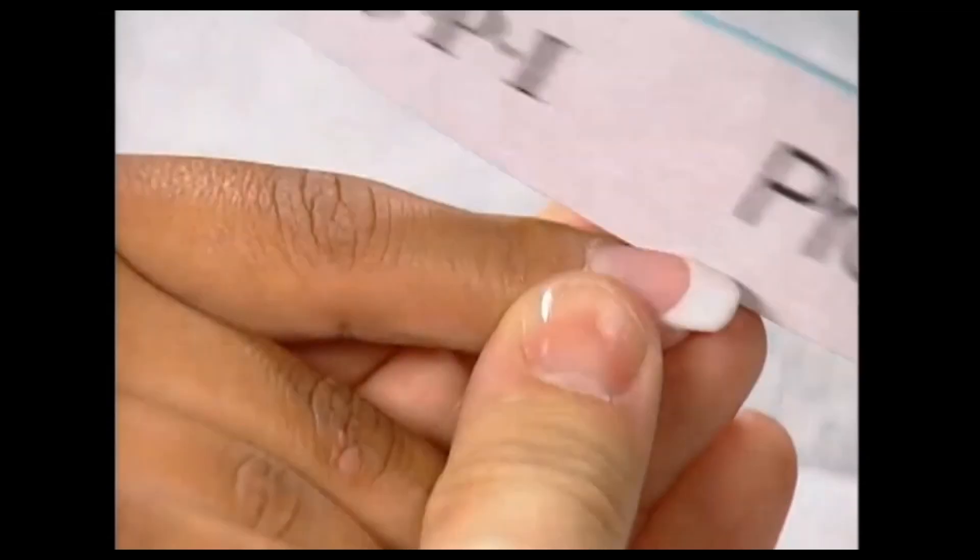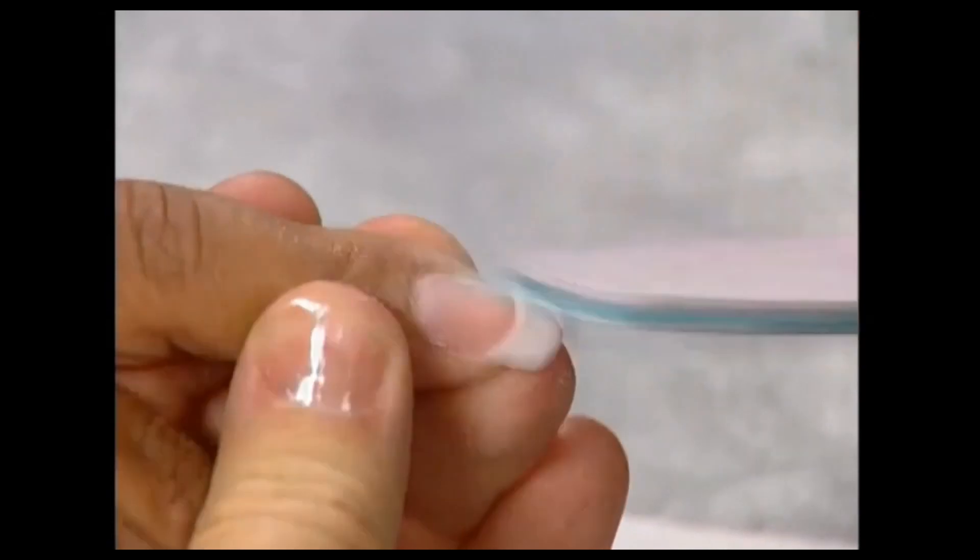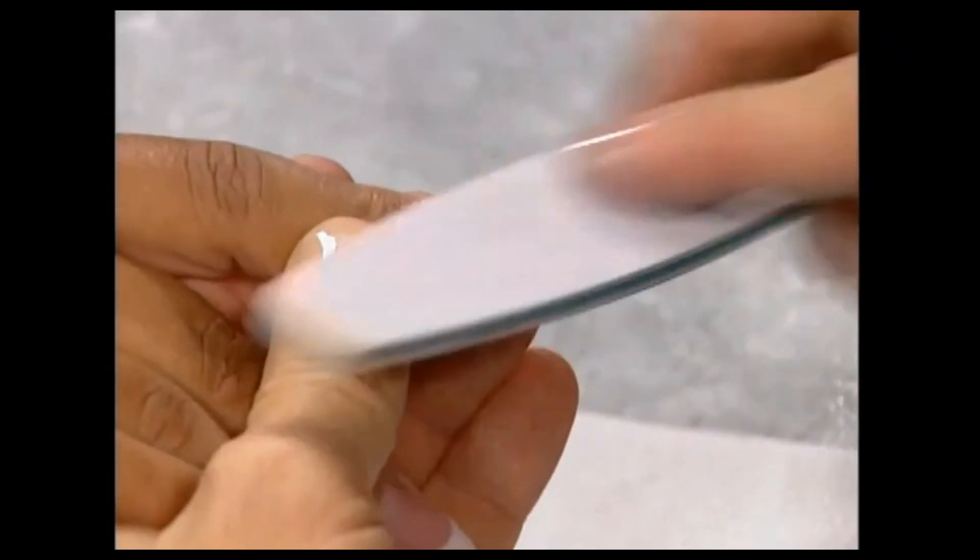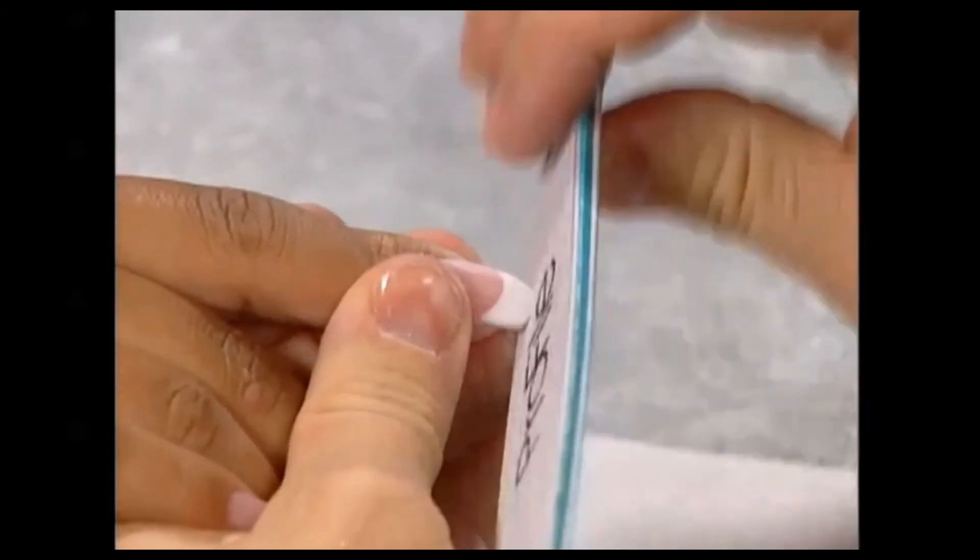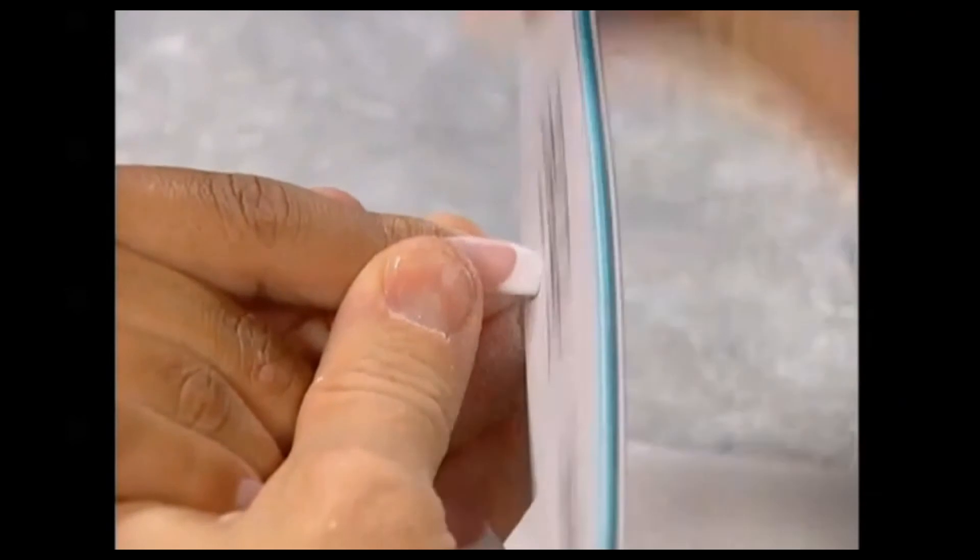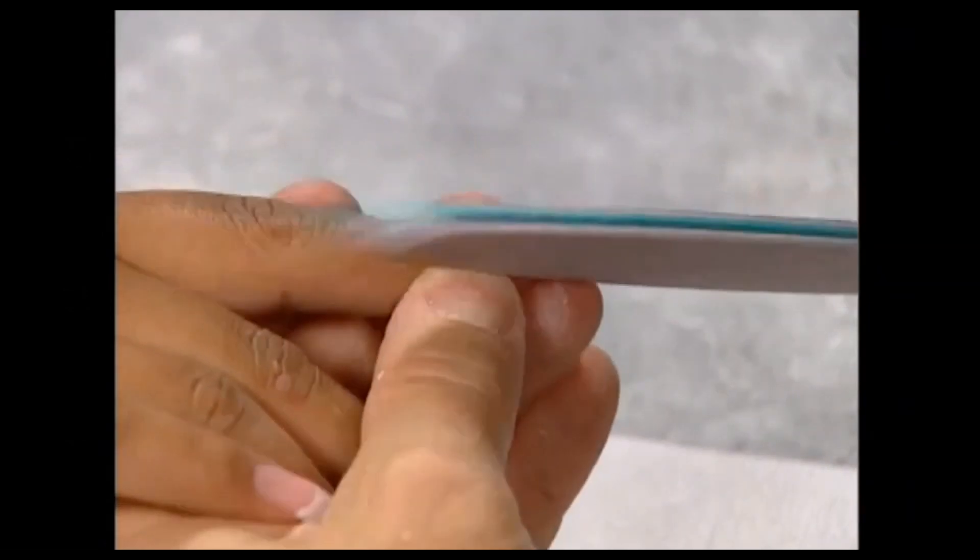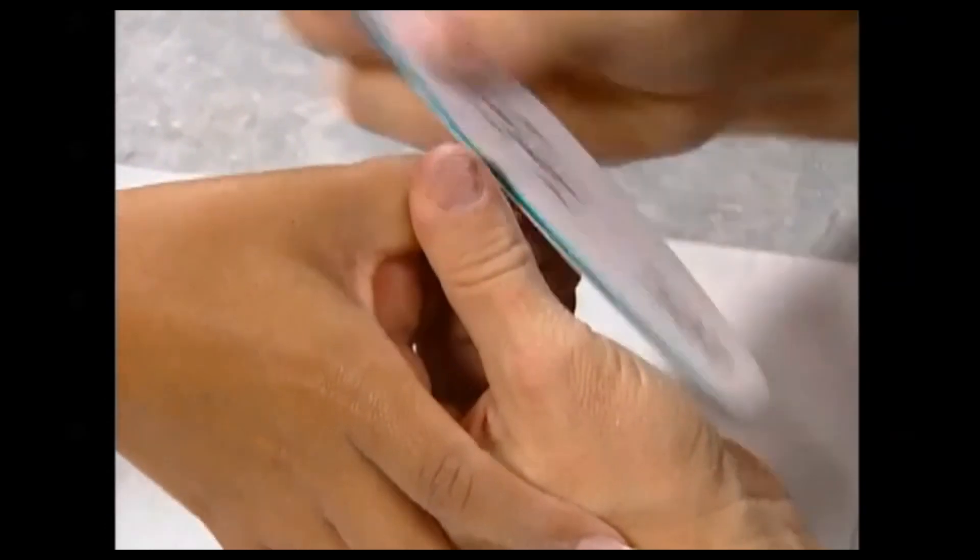Shape the free edges and contour the nail surfaces with an OPI Profiles Edge Silver 150 file. Then use the Edge Silver 180 file to finish contouring and remove any scratches.